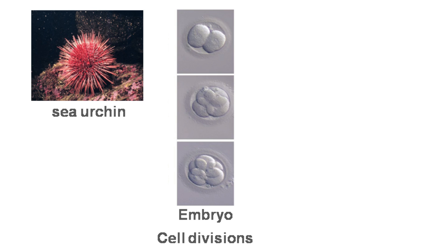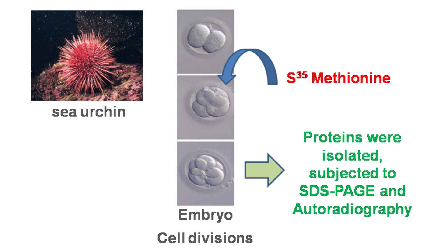Here's what Tim Hunt did. He took sea urchin embryos that were undergoing synchronous cell division and pulsed them with radiolabeled methionine. Samples were withdrawn at different time intervals. Proteins were isolated, subjected to SDS-PAGE and autoradiography.